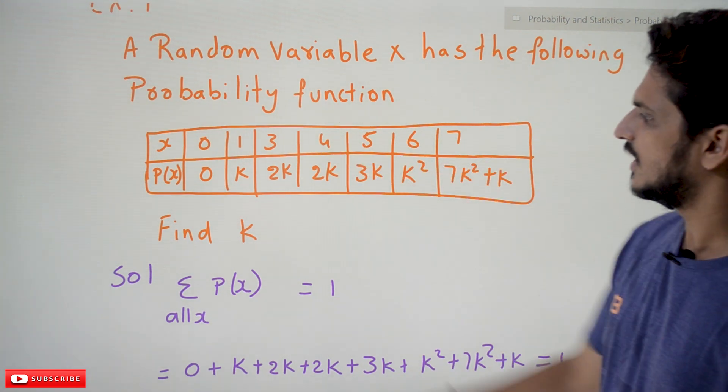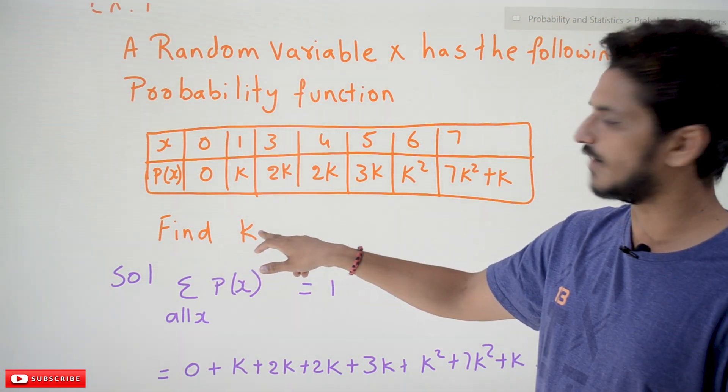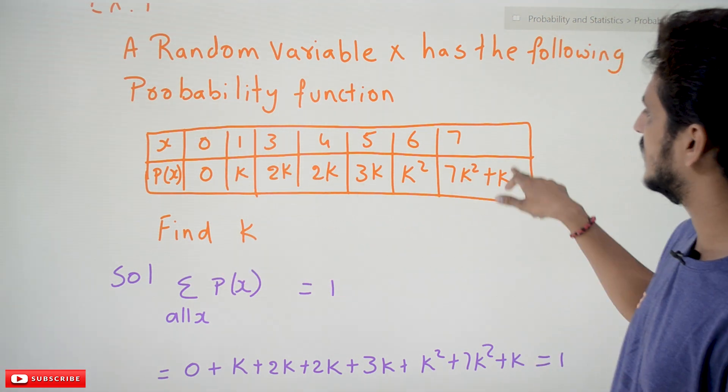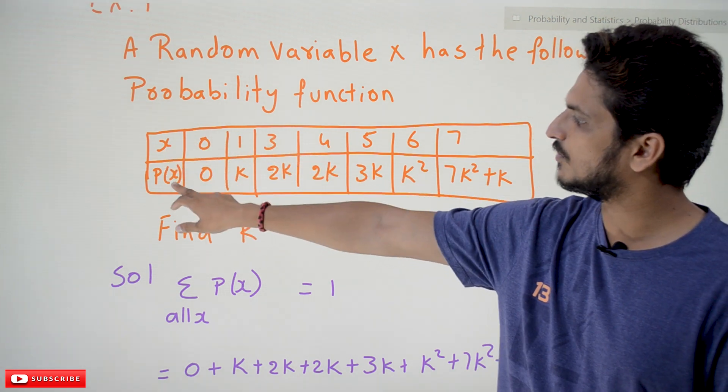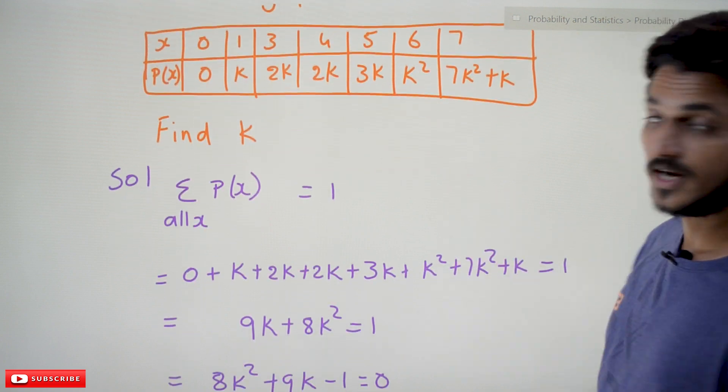They are trying to ask: find the K value. 0, K, all these values have been provided. This is the random variable X. For that, the probability distribution is like this. From the conditions, we know that Σ all x P(x) = 1.